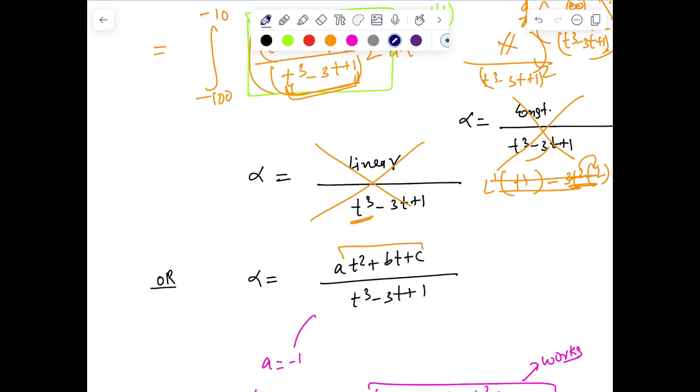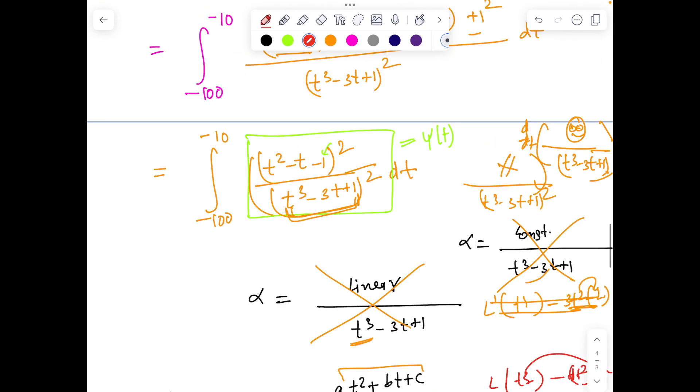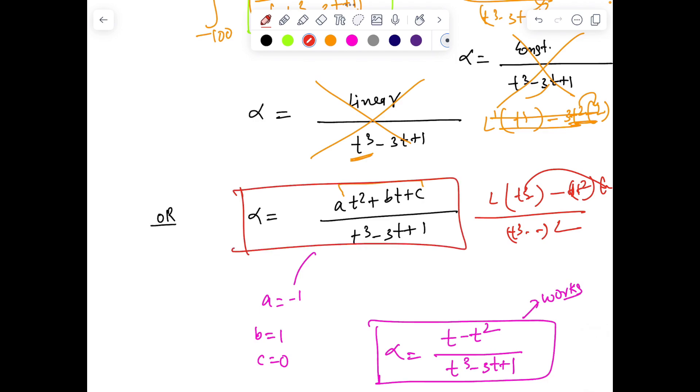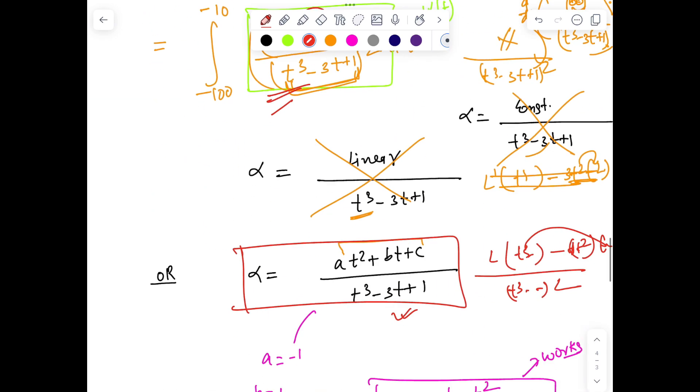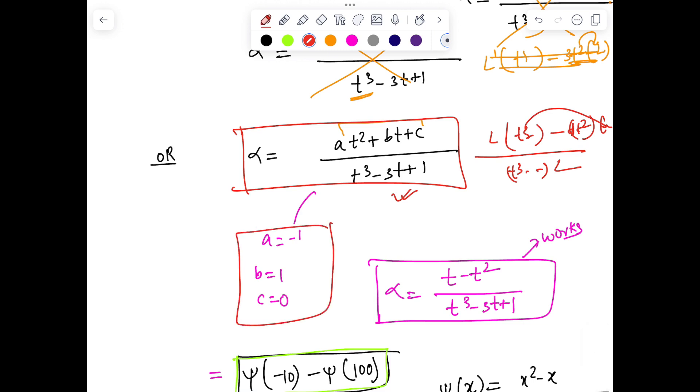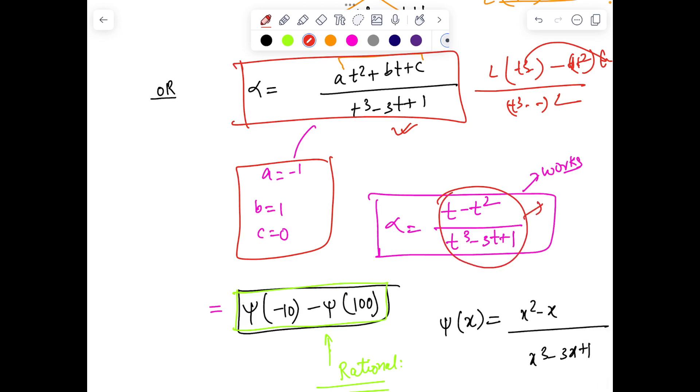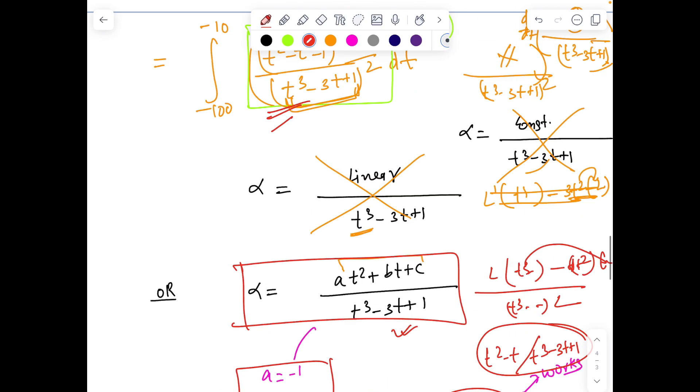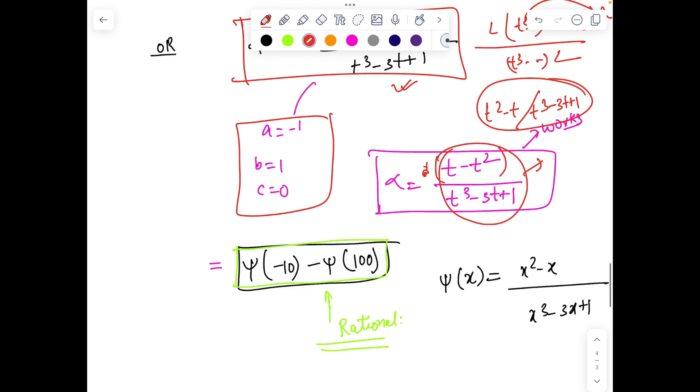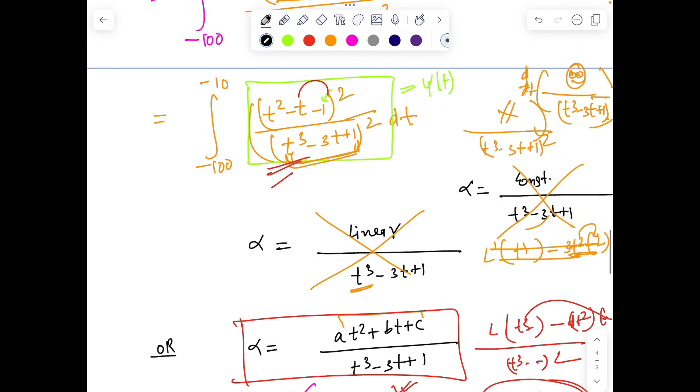Now differentiating the numerator gives a linear term, and we have t³ minus something giving t⁴, which makes sense. Indeed, if I make this substitution and differentiate this expression, comparing with the given integrand, I get a = -1, b = 1, and c = 0. That's good news! You can check whether by differentiating (t² - t)/(t³ - 3t + 1), you get this whole square. Finally, we know this is a perfect differential.